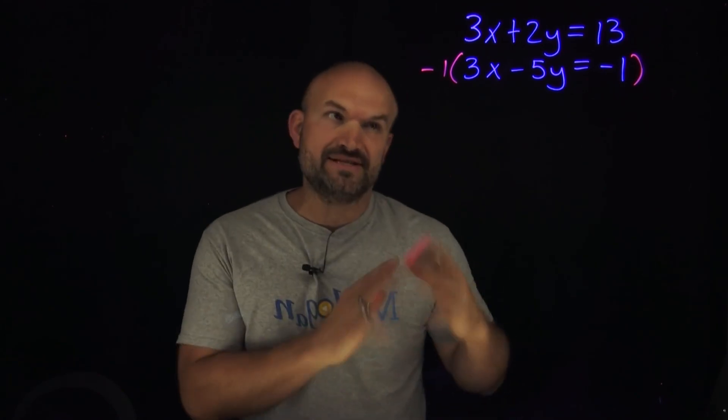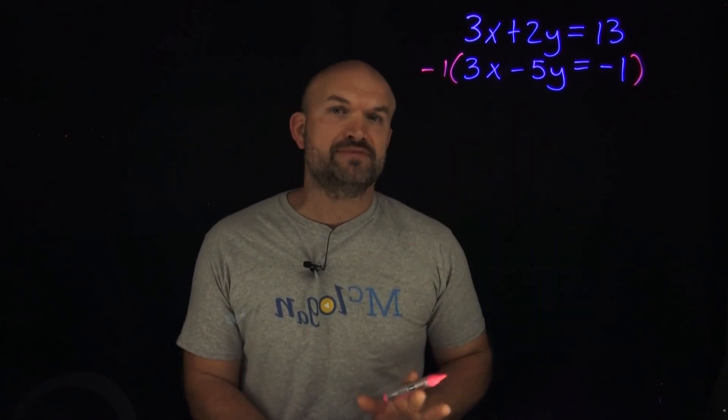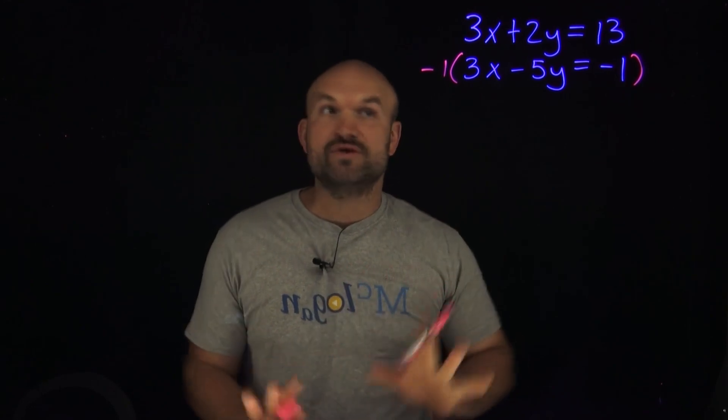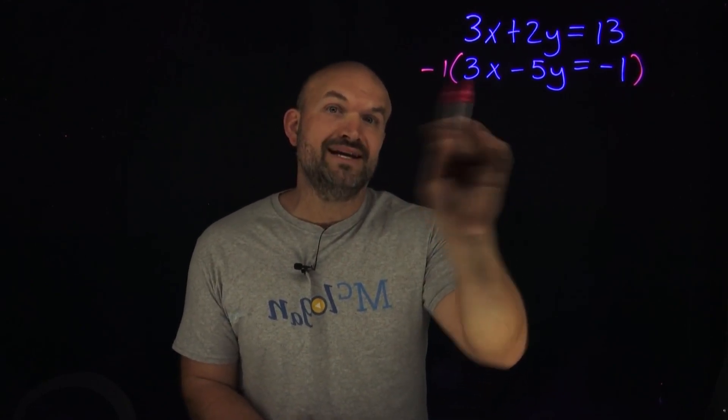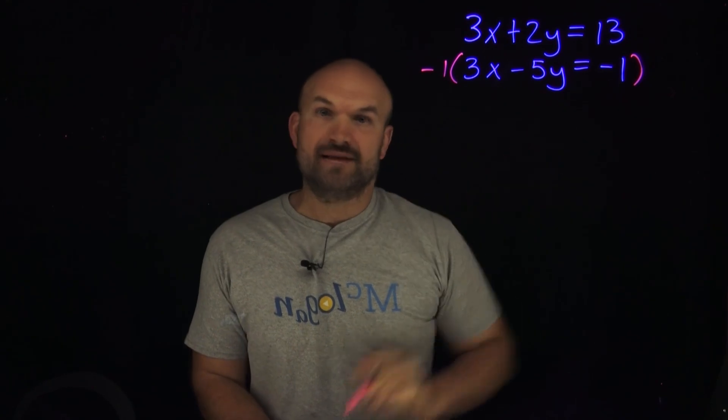Now you don't have to rewrite it, but for the sake of understanding what we're doing in this problem, I'm just going to go ahead and rewrite this whole system equation by making sure that I multiply this negative one times everything in the bottom equation.